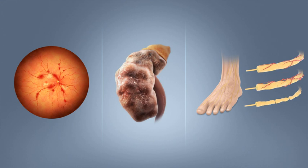The word 'diabetes' is first recorded in English, in the form 'diabete,' in a medical text written around 1425. The word mellitus comes from the classical Latin word mellitus, meaning 'mellite,' i.e., sweetened with honey, honey sweet. The Latin word comes from mel, meaning honey, sweetness, pleasant thing, and the suffix -ite. It was Thomas Willis who in 1675 added 'mellitus' to the word 'diabetes' as a designation for the disease, when he noticed the urine of a diabetic had a sweet taste, glycosuria. This sweet taste had been noticed in urine by the ancient Greeks, Chinese, Egyptians, Indians, and Persians.